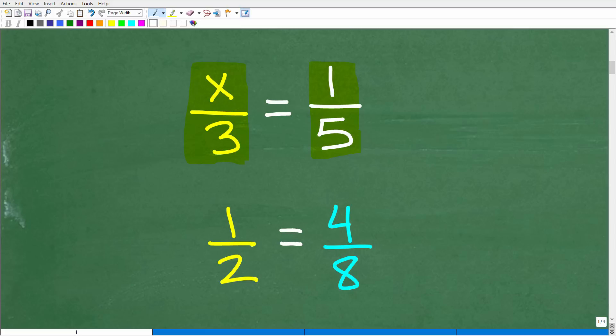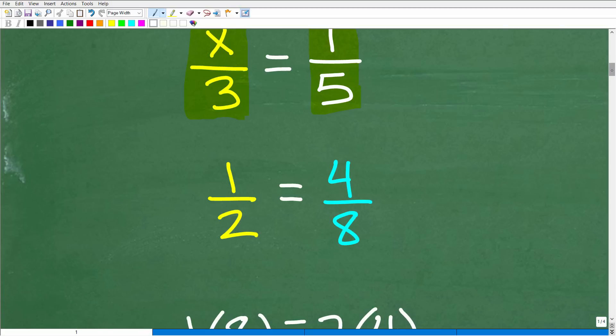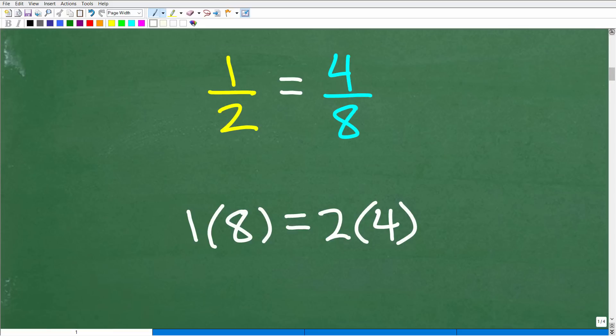If you remember, there's other properties about proportions as well. But if you remember this one specific property, you'll be able to solve basically all proportion problems. Okay. So one half is equal to four over eight. What is the cross product? Let me go ahead and show you this right now.